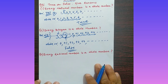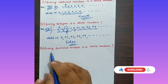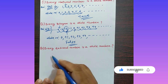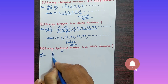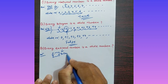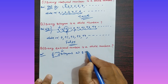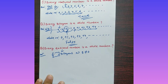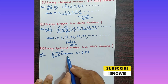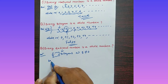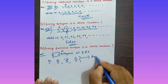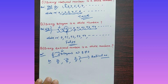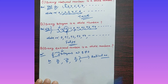Statement (iii): Every rational number is a whole number. Rational numbers can be written in the form of p/q where p and q are both integers and q is not equal to zero. Examples of rational numbers include 10/5, -12/7, and 0/5 — all of these are rational numbers.